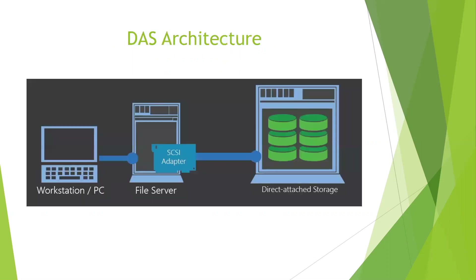Here's a basic look at what a DAS topology would look like. You have your workstation or client connecting into a file server. That file server has a RAID card or SCSI adapter with an external connection to your direct-attached storage. The file server takes care of all the processing and work, and the direct-attached storage is just housing those hard drives for it.